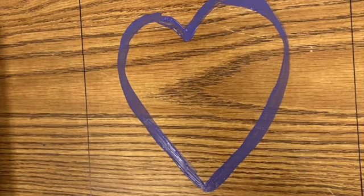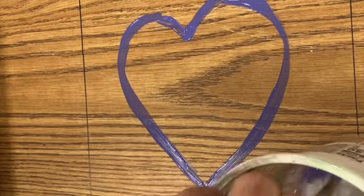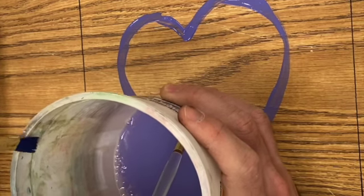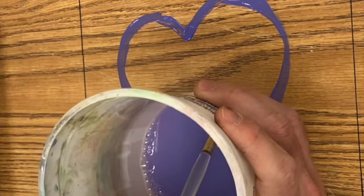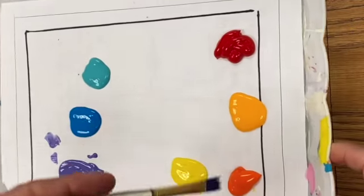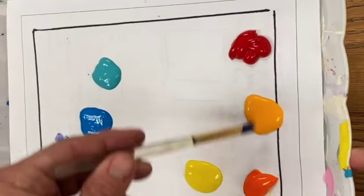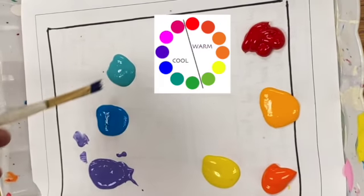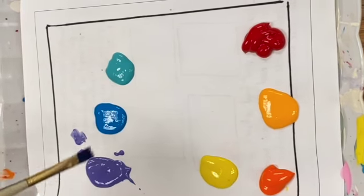When I'm finished with my purple I'm going to put it in my cup of water, wash it out, wipe the bristles on the rim of the cup, and change to another color. Here's my paint palette. I think I'm going to use warm colors to paint my heart and I'll paint the outside of my heart with the cool colors.